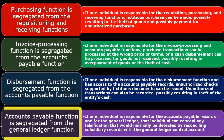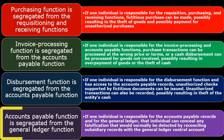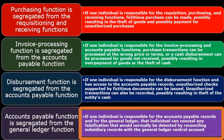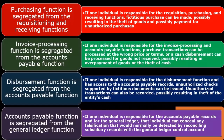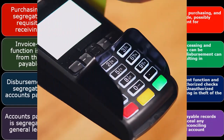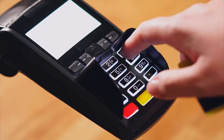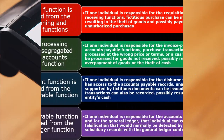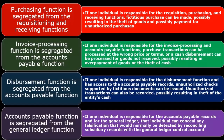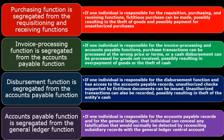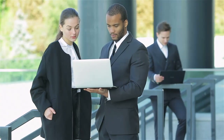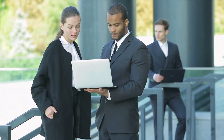The accounts payable function is segregated from the general ledger function. If one individual is responsible for both the accounts payable records and the general ledger, that individual can conceal any falsification that would normally be detected by reconciling the subsidiary records with the general ledger control account. We typically think of the accounts payable subsidiary ledger being broken out by vendor, and it needs to agree with the controlling account on the general ledger. If we separate those two out and have two people involved, we'll have a better check during reconciliation. Whereas if only one person handles both, they can perform a falsification within the reconciliation and mask what would otherwise be caught.